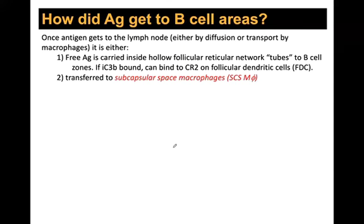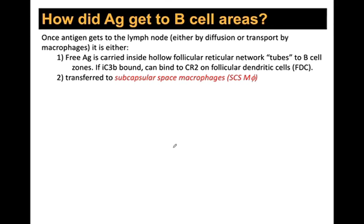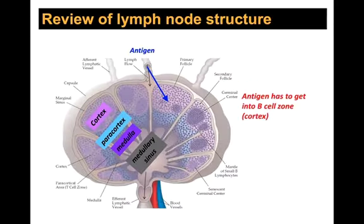Follicular dendritic cells are the main activating cells for B cells — they pick up free antigen and display it. The more important mechanism is active transport: macrophages bring antigen in via CR2 recognizing iC3b, or via Fc receptors for antibody-coated antigen. Once at the lymph node, they transfer antigen to subcapsular space macrophages, which sit just on top of the cortex and control what gets passed into the cortical B cell zone.